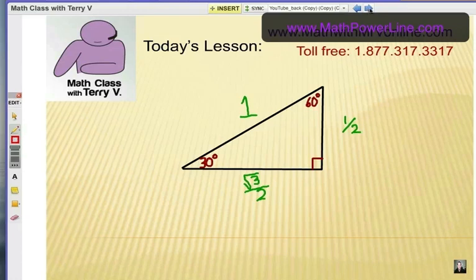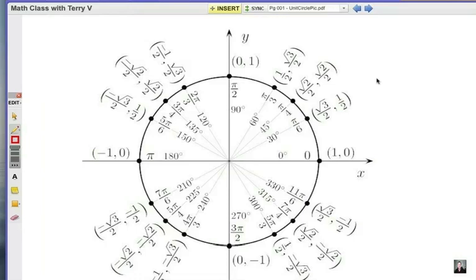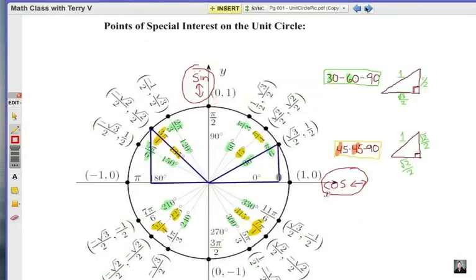We have 30-60-90 triangles, and the short leg will be 1 half. The long leg is radical 3 over 2. With some angles on the unit circle, you'll get a 45-45-90 triangle. In that case, the sine and cosine values will be radical 2 over 2, because both legs are congruent. In the unit circle itself, we're talking about these triangles that are formed as you rotate around and use certain angles.